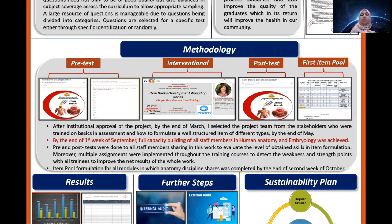By the end of the first week of September, full capacity building of all staff members in the Human Anatomy and Embryology department was achieved. Pre- and post-tests were done to all staff members sharing in this work to evaluate the level of obtained skills in item formulation. Moreover, multiple assignments were implemented throughout the training courses to detect the weakness and strength points of all trainees to improve the net results of the whole work. Item pool formulation for all modules in which the anatomy discipline shares was completed by the end of the second week of October.